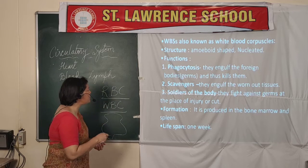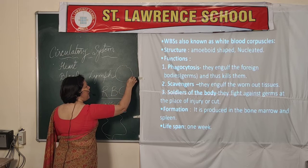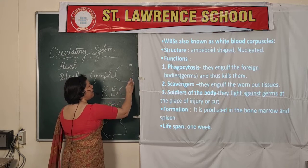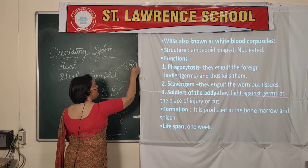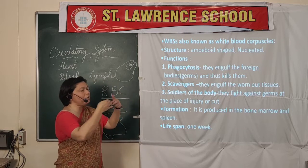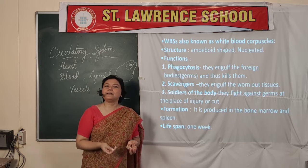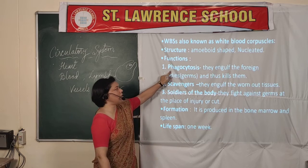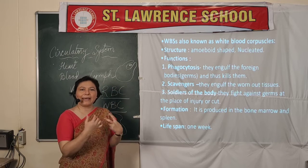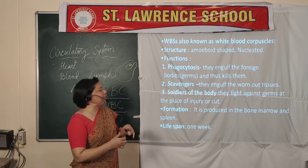Phagocytosis: if a WBC finds any germs in the surrounding, it will engulf them — extending its pseudopodia arms to swallow those germs and kill them. In the course of time, the WBC also gets destroyed. That is why it is called phagocytosis — to completely swallow or engulf foreign particles and kill them.